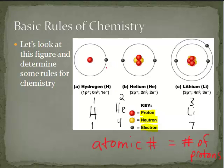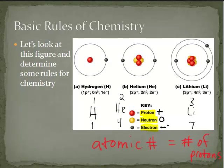The reason that the number of protons and electrons are equal is because protons have a positive charge and electrons have a negative charge. Hydrogen does not have a charge, so it has one proton, one electron — a positive one and a negative one — they cancel out, giving it a neutral charge. Helium has two protons, two electrons, a neutral charge. Neutrons do not have a charge. So protons are positively charged, neutrons have no charge, and electrons have a negative charge.